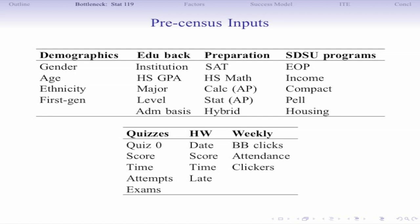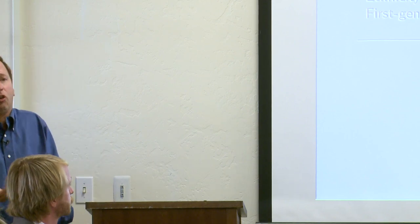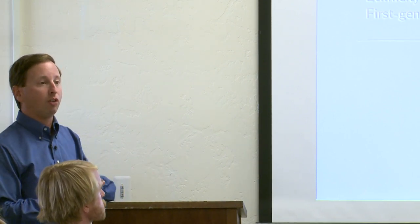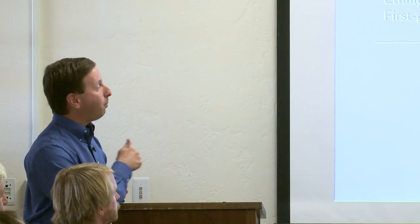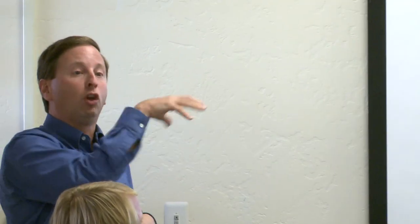We have a whole bunch of course-level data. Quizzes and homeworks were done online; quizzes could be taken multiple times and homeworks could be submitted late. We have data on homework scores, when they did it, how many quiz attempts, whether homework was late, and exact submission dates. Quiz zero is a math competency exam — essentially an algebra assessment — given at the beginning of the semester. We also have exam scores, Blackboard click rates as a proxy for LMS engagement, attendance measured by clickers, and clicker quiz scores.